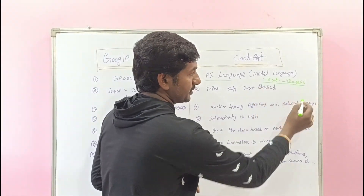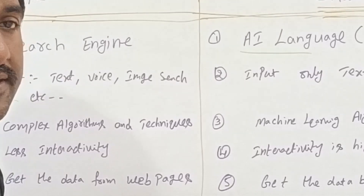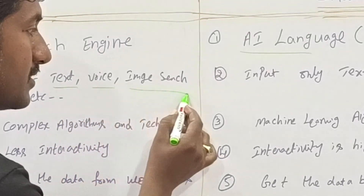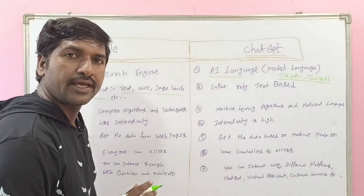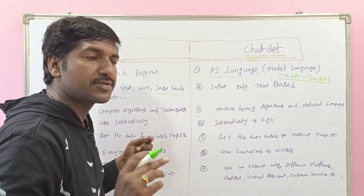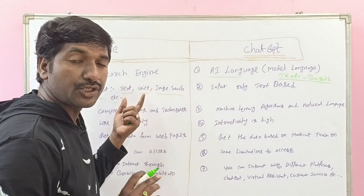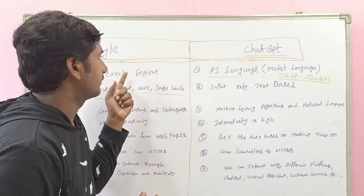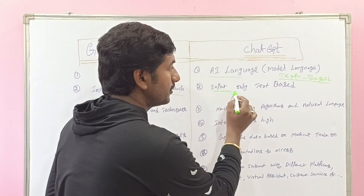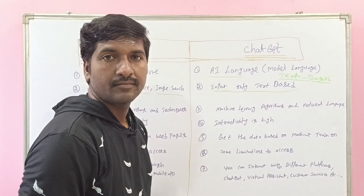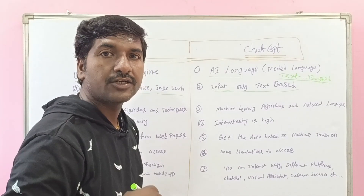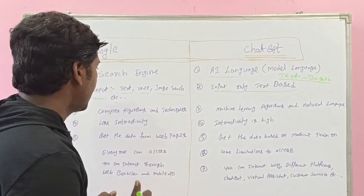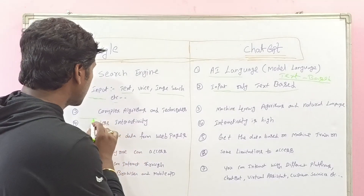The second main difference is about input. With Google, you can give input as text, voice, or image search — different types of inputs to get the expected information. Whereas with ChatGPT, you can give input in text only. You cannot give input as voice or image search, as of now.